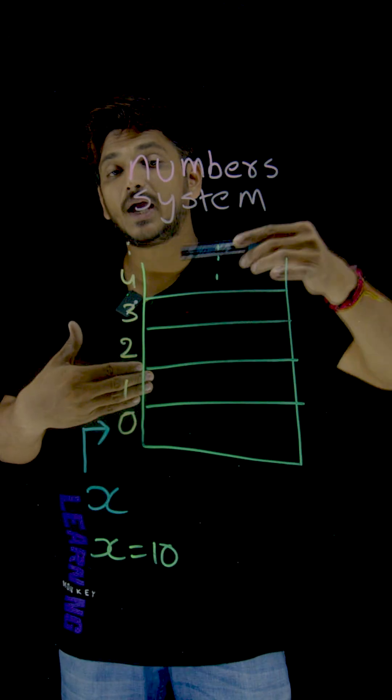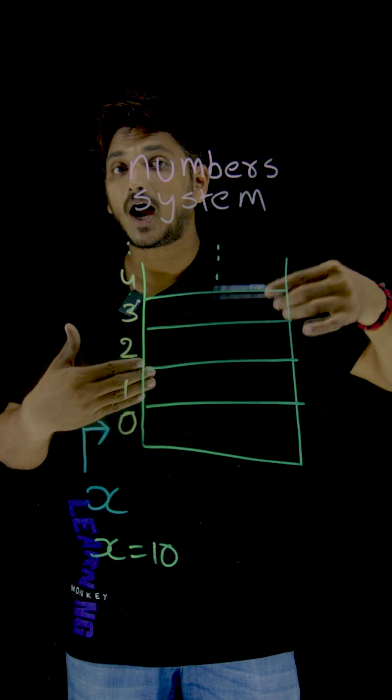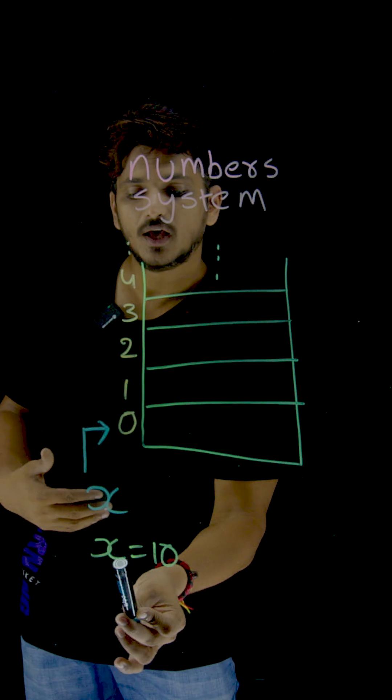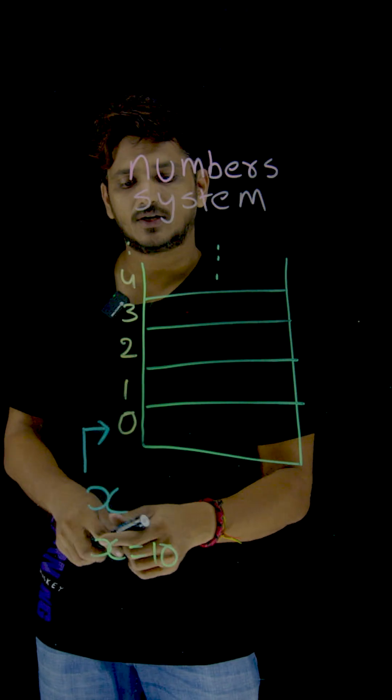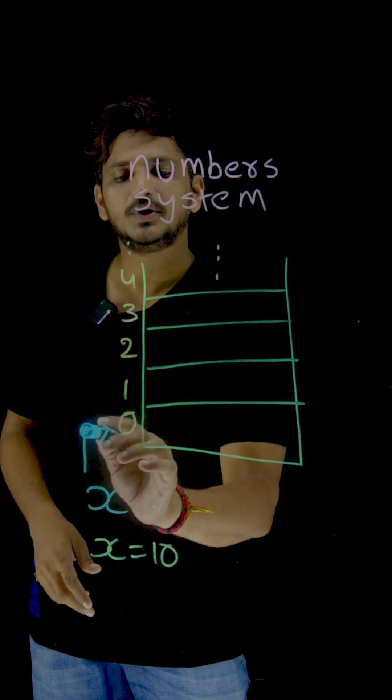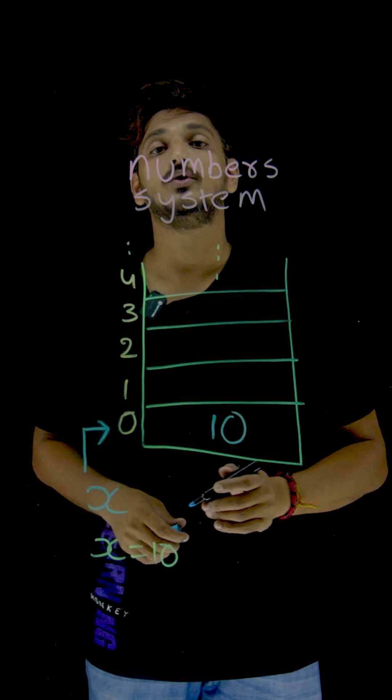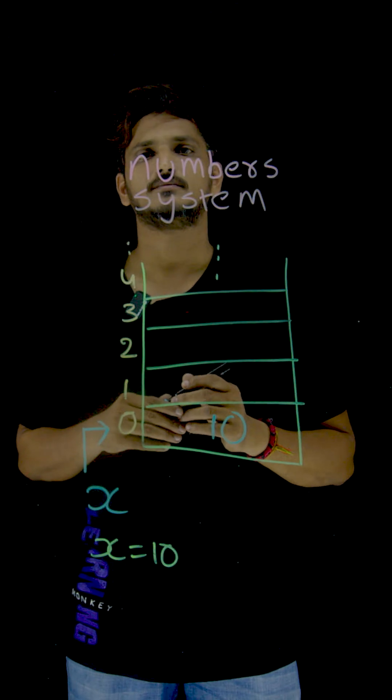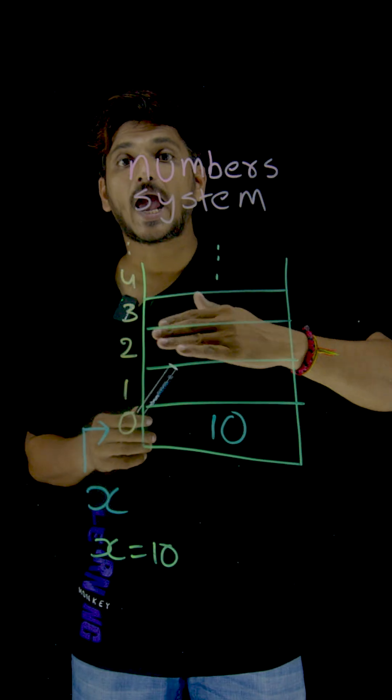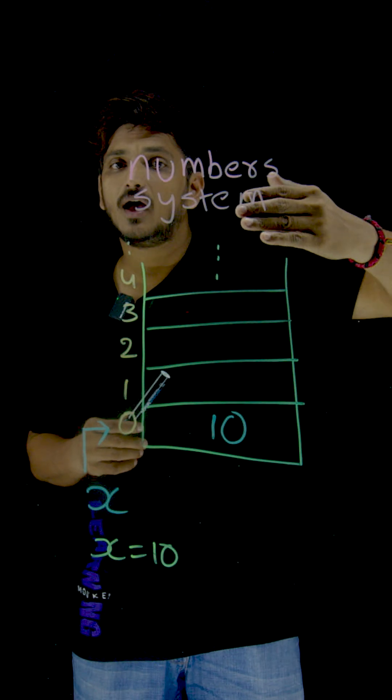What happens behind the scenes? In the hardware device, what happens whenever you write this code? Value 10 is going to be stored in the memory location. This is where it is going to be stored. This is what happens inside the hardware.